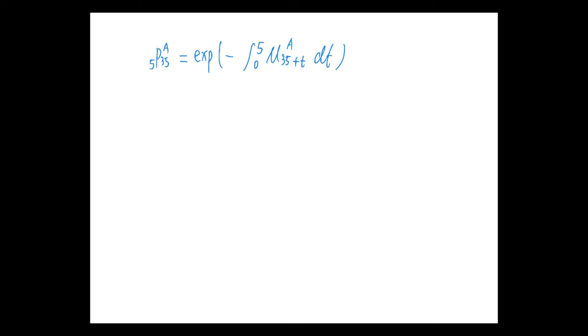And we know that this force of mortality is 50% greater than the one of U.S., so it's 1.5 times mu 35 plus T, if we denote this one as the one of U.S. So this probability is 0 to 5, 1.5, mu 35 plus T dt.